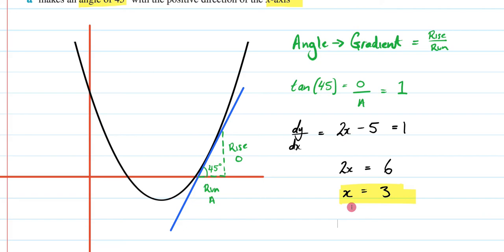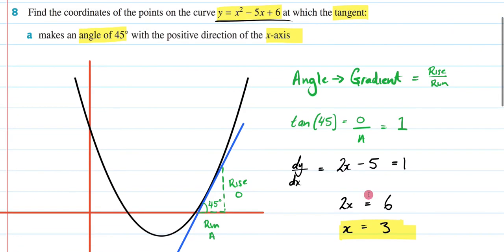So, that means when x = 3, my tangent is going to make a 45° angle with the positive direction of my x-axis. And if you really wanted to graph it, you don't have to graph it. I've just graphed it to help you understand what's going on. This point right here is going to be 3, 0.